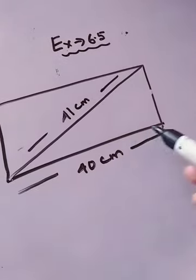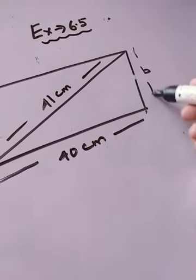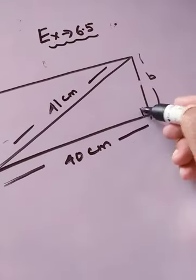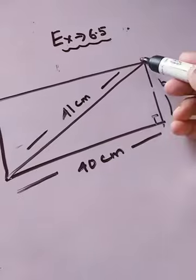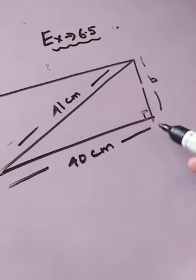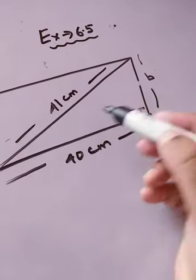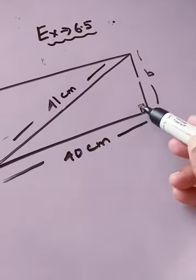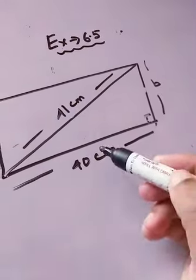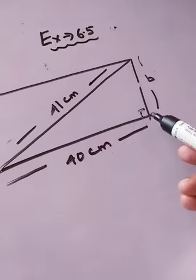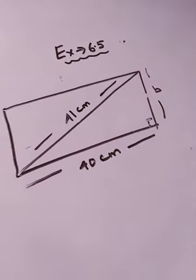To find the perimeter you need the value of length as well as breadth. We don't know the breadth, but when we draw this diagonal we can observe that we get a right angle triangle. By using Pythagoras theorem we can easily find it. The diagonal is the hypotenuse — the side opposite to 90 degrees is always the hypotenuse. This is the base and this is the perpendicular.